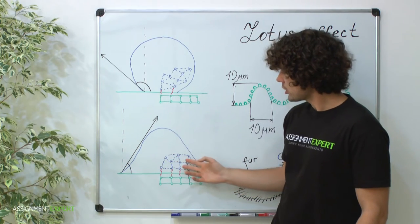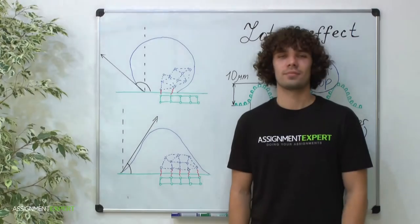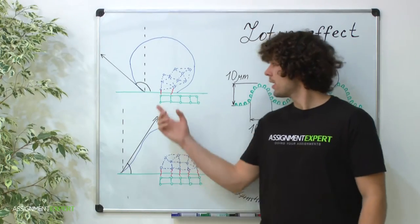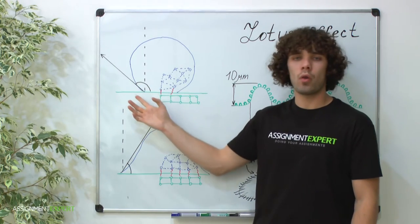Conversely, if they are less attracted to each other, the liquid spreads over the surface. In the first case, the liquid doesn't wet the surface, and the contact angle is more than 90 degrees.